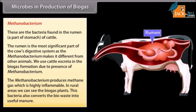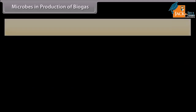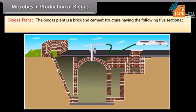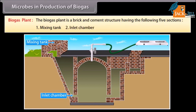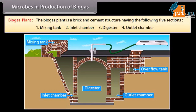In rural areas we can see biogas plants. Methanobacterium also converts bio-waste into useful manure. The biogas plant is a brick and cement structure having five sections: (1) Mixing tank, (2) Inlet chamber, (3) Digester, (4) Outlet chamber, (5) Overflow tank.